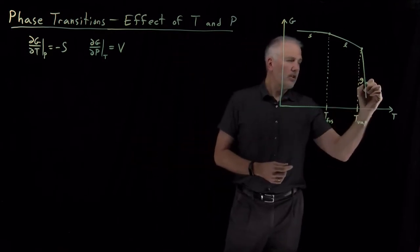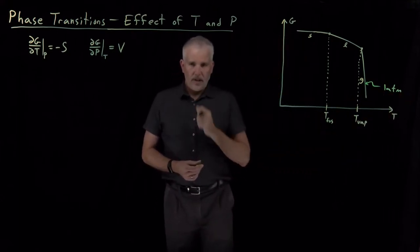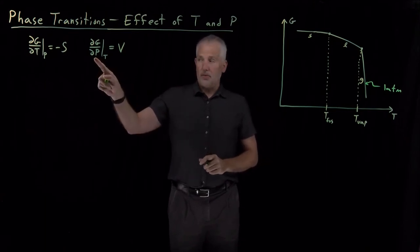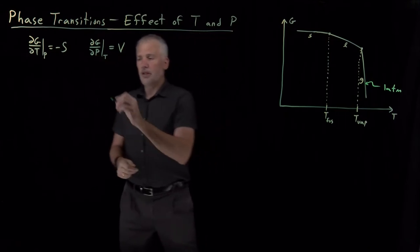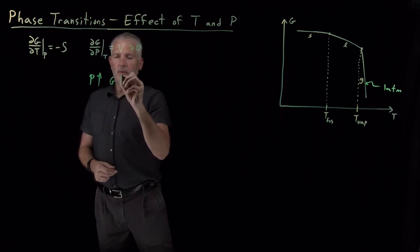So let's say these curves are all at a pressure of one atmosphere. If we imagine doing the same thing as we change the pressure, draw curves at a different pressure. If we change the pressure, when the pressure goes up, because the volume is positive, the free energy will go up.